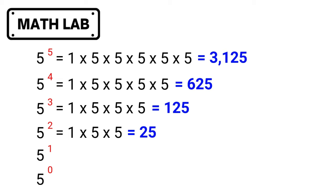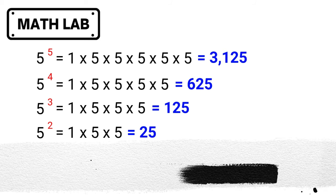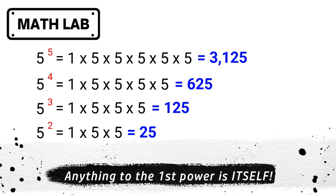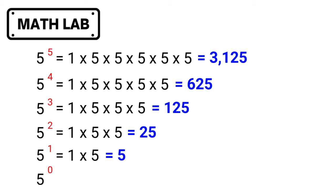Now let's get into some fun. If we raise five to the power of one, that means we're starting with one and multiplying that by one copy of five. So one times five is just five. This leads us to a rule of exponents: anything raised to the first power, or the power of one, is itself. So 88 raised to the power of one is just 88.